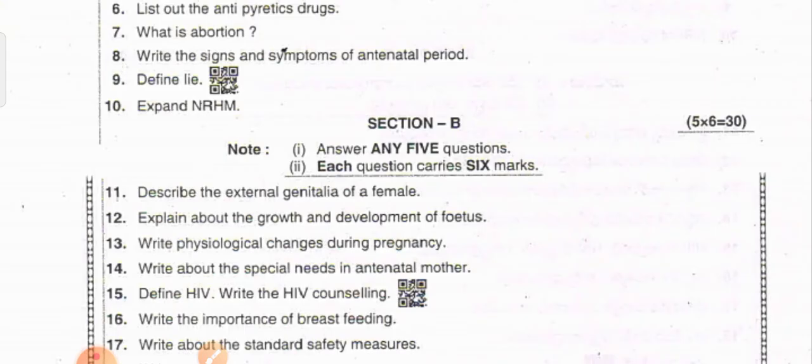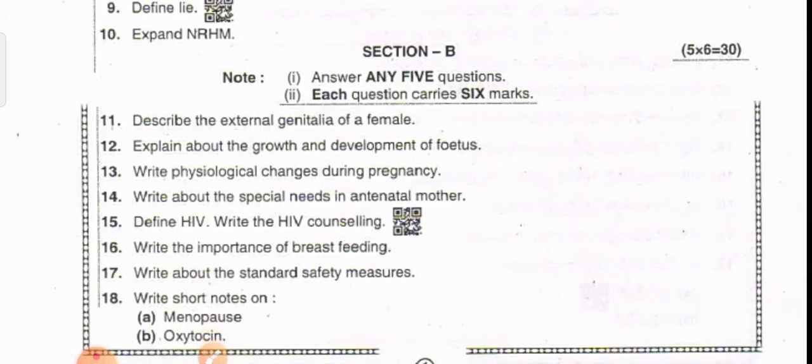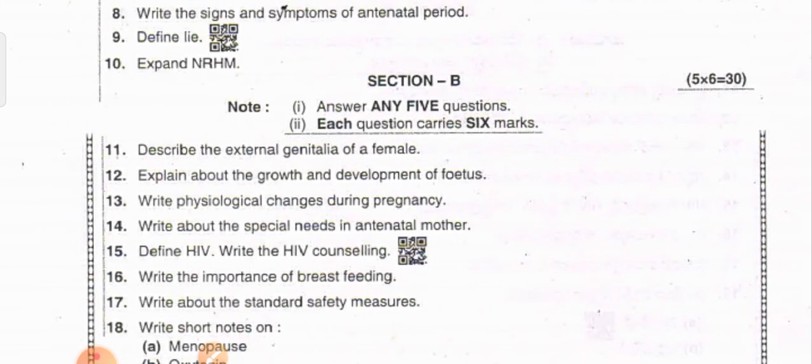So 10 questions will be there, each question carries two marks. 10 into 2 is 20. Section A overall consists of 20 marks, pass marks 18. Overall in Section B, answer any five questions. They will give eight questions, out of eight you have to answer any five. Each question carries six marks. Six into five is thirty. Section B is 30, Section A overall is 50, pass marks 18.